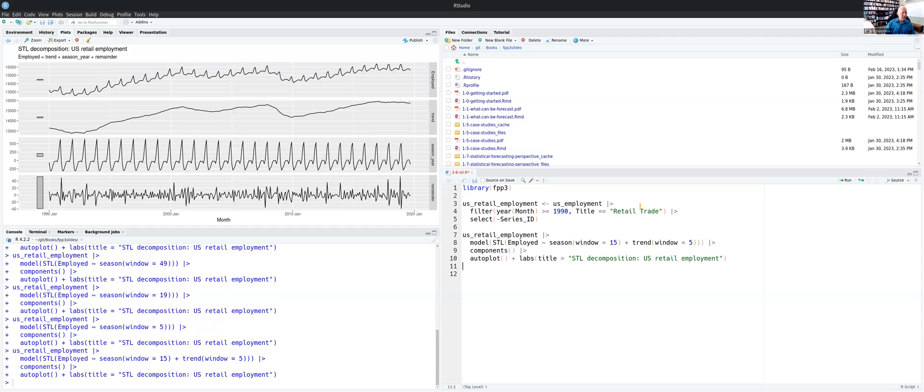So what's happening when it's doing the trend calculation is it's using windows of length five for moving averages. So it's now quite a wiggly thing because the seasonally adjusted data, which it's averaging,